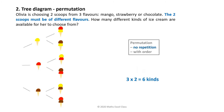She has three choices for the first scoop. Then the second scoop must be of a different flavour, so she is left with two choices for the second scoop. Three times two equals six kinds of ice cream for Olivia to choose from.